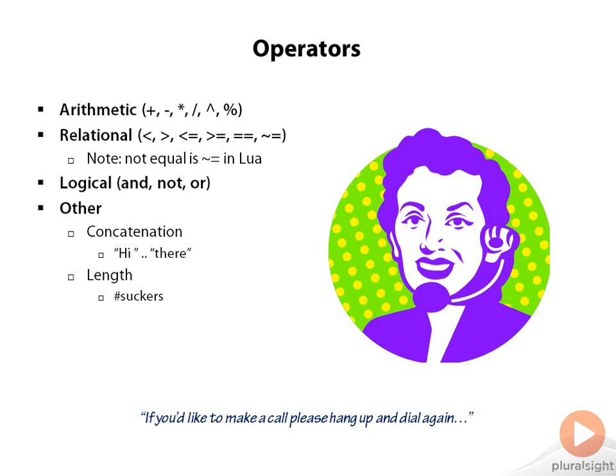Then we have the relational operators. You can compare things to tell if one is greater or less than another, equal or less than, or equal to or greater than, or equal to. There is one oddity though — not equal syntax is a bit different for Lua. It's a tilde followed by an equal sign.